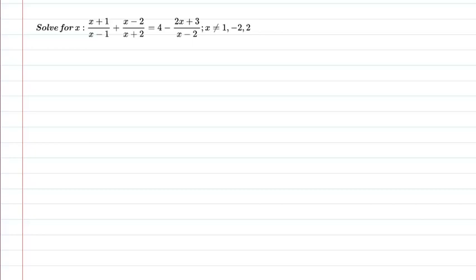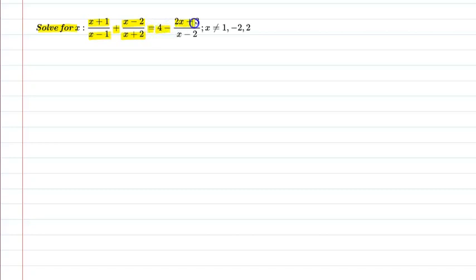Hello students, let us understand the following question. Solve for x: x plus 1 upon x minus 1, plus x minus 2 upon x plus 2, is equal to 4 minus 2x plus 3 upon x minus 2, such that x is not equal to 1, minus 2, and 2.